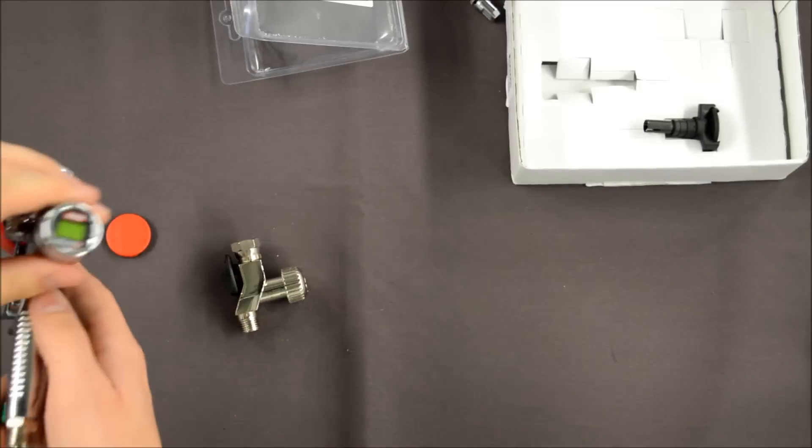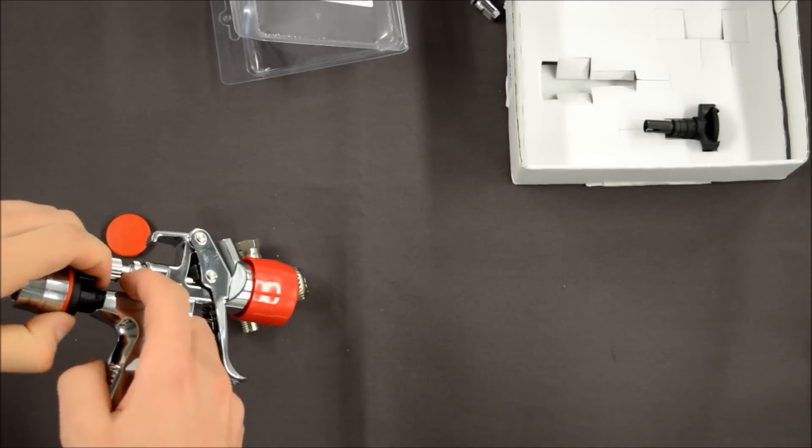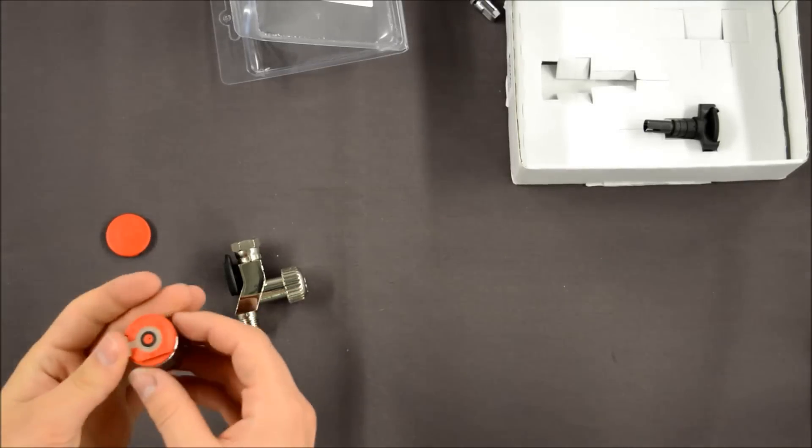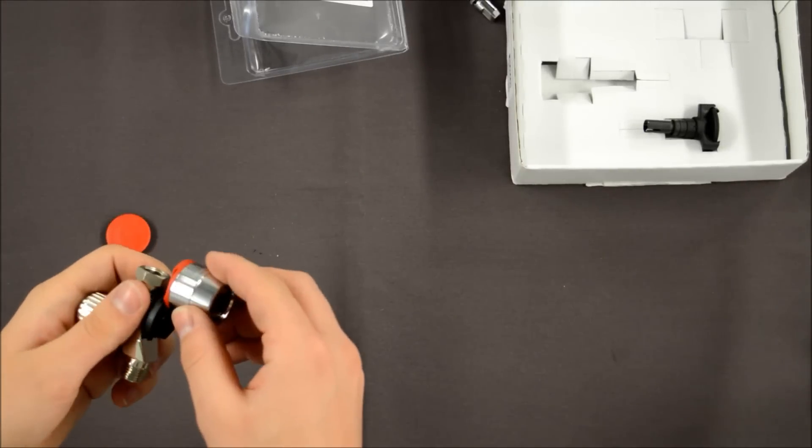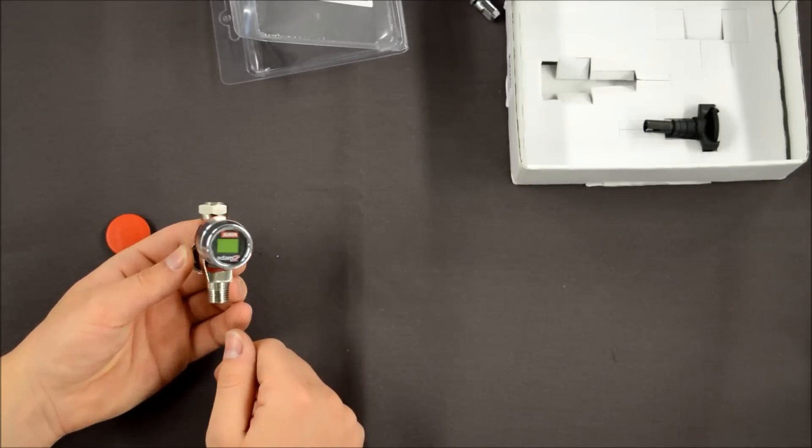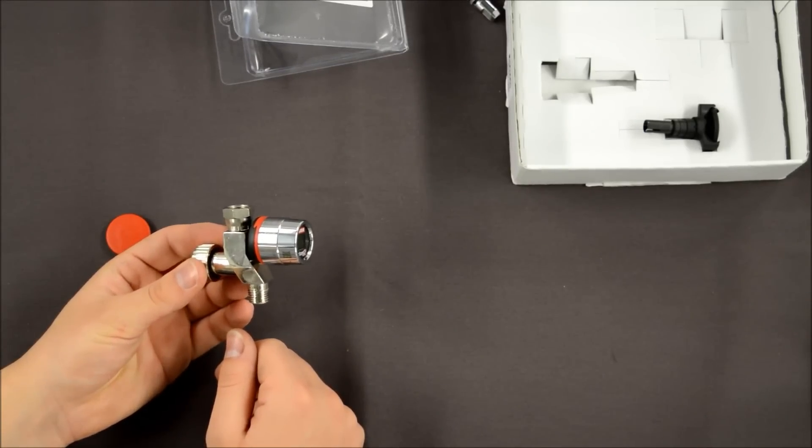And then we can go and insert our ADAM. So we can take that off of our gun. And then we can just pop it onto this gauge. So we've now got an electronic gauge ready to go below our gun.